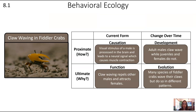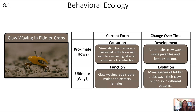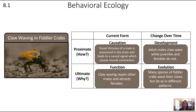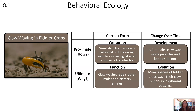Here's the answer matching those to the table. Stimulus and response is the mechanism in the here and now. Development looks at how this is happening — what's the trigger — but on a longer time scale. The here-and-now function addresses why the crab waves — repelling males or attracting females. And comparing different species of crab over evolutionary time addresses the evolutionary history.